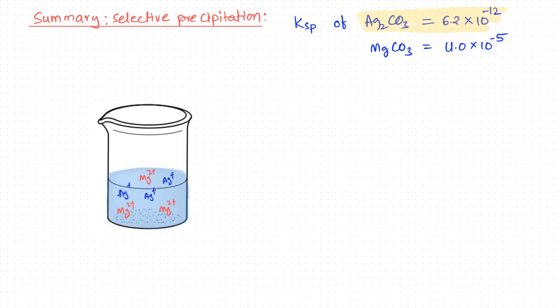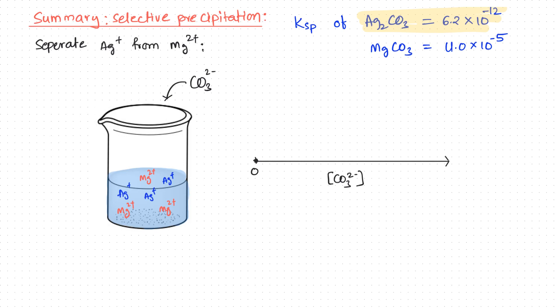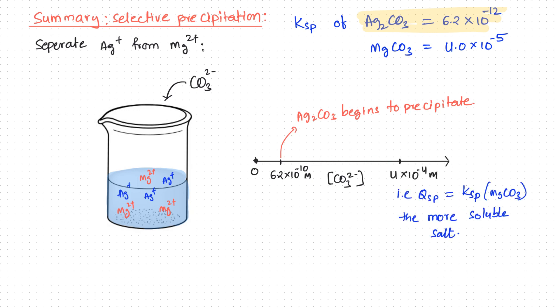In summary, we can use selective precipitation to separate a mixture of ions in a given solution. A precipitating ion such as carbonate ion is added to the solution. At first, the less soluble salt, i.e., silver carbonate, begins to precipitate. We continue to add carbonate ion until the Qsp of the more soluble salt, i.e., magnesium carbonate, equals its Ksp. The less soluble salt, silver carbonate, will precipitate in as large a quantity as possible, leaving behind the ion of the more soluble compound.